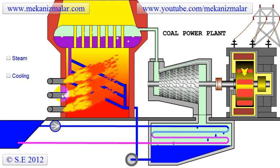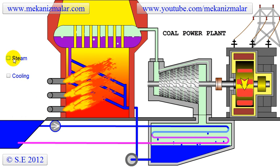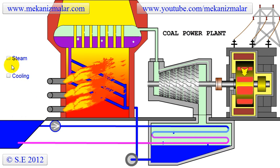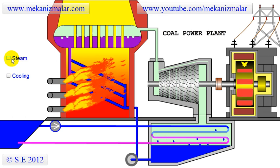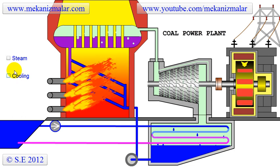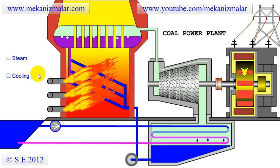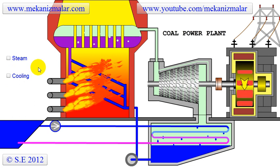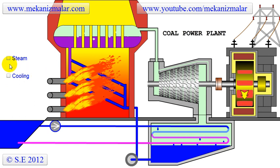There are two major water cycles in any power plant, whether it is a coal, nuclear, or gas power plant. The first is the closed loop power-producing water cycle, which we call the steam cycle. The second is the open loop cooling water cycle. No thermal power plant can operate without these two cycles.